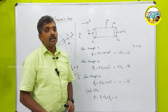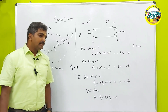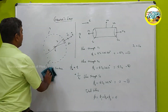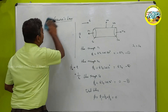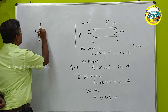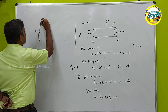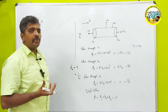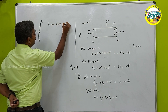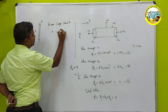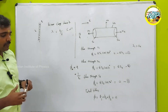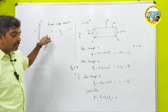Next are the applications of Gauss's law. To understand these applications, I need to define certain quantities. The first is linear charge density. If you have a wire of length L filled with charge, the total charge is Q. The charge per unit length is called linear charge density, λ = Q/L, measured in coulombs per metre. This will be used in the applications of Gauss's law.